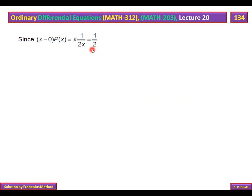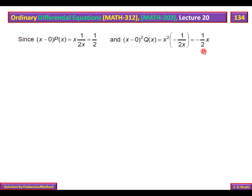Similarly, x² · Q(x) = x² · (−1/2x) = −x/2, which is also differentiable and analytic. Since both x·P(x) and x²·Q(x) are analytic at x = 0, we conclude that x = 0 is a regular singular point.